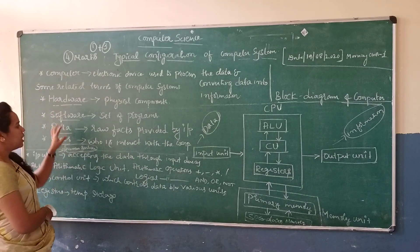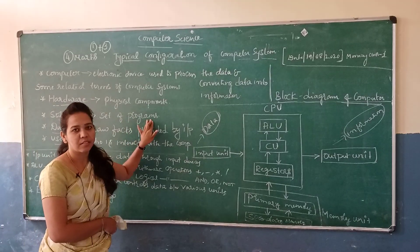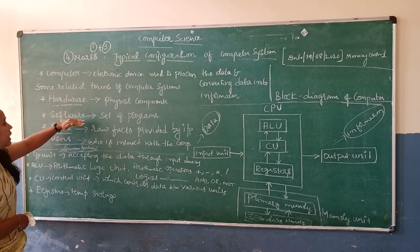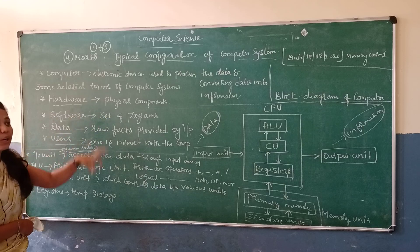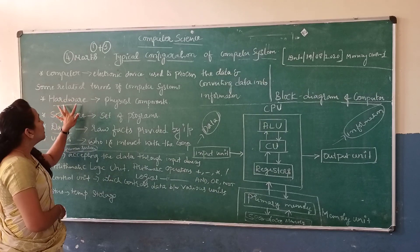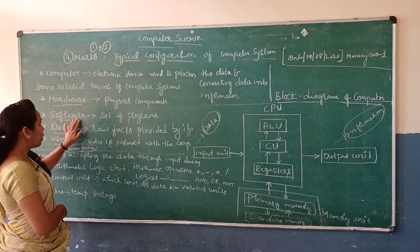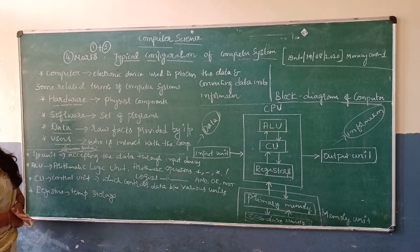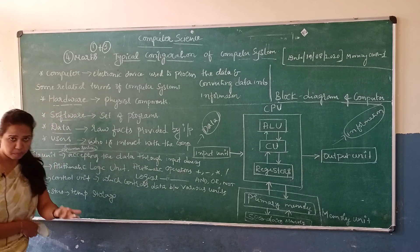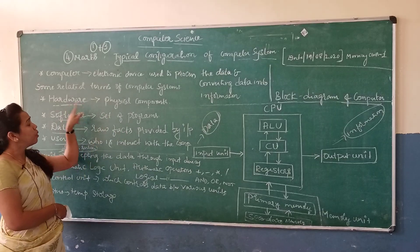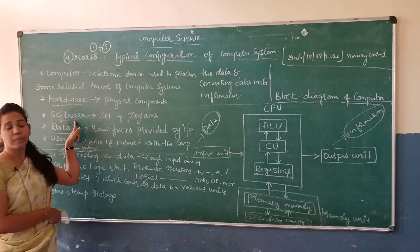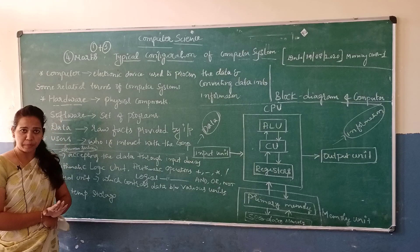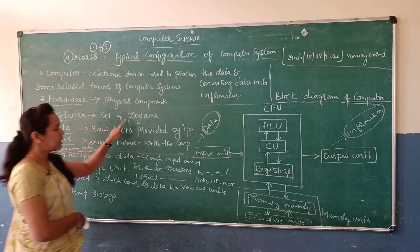Next is software. Software means it is a set of programs. For example, mouse is hardware. If that hardware has to work, it needs related software. So hardware is important and software is also important. Software means it's a set of programs.